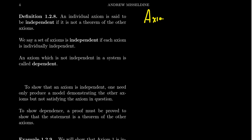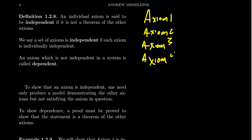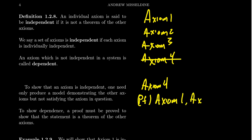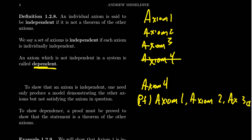Say we have axioms one, two, three, and four — much like the FIFO theory we've developed. If we were to actually prove axiom four using axioms one, two, and three as a proof, then that means our axiom is what we call dependent. A dependent axiom is a theorem of the other axioms.